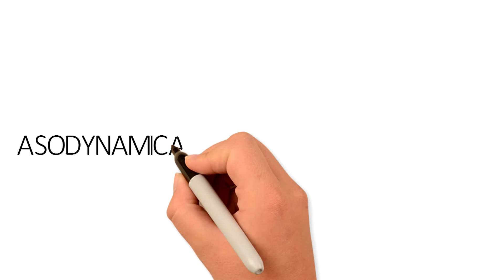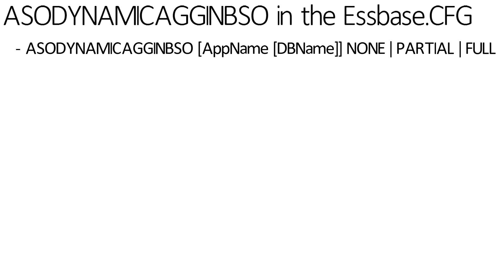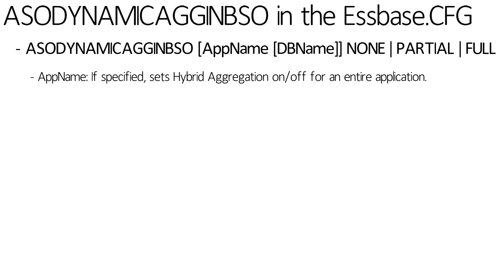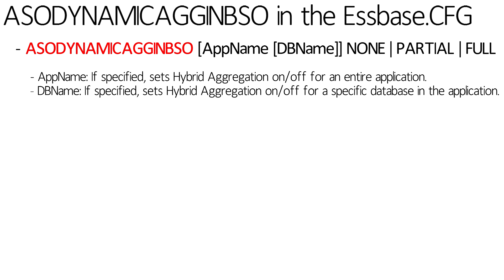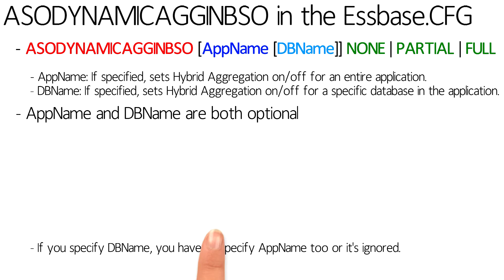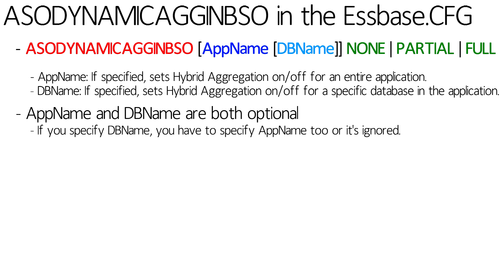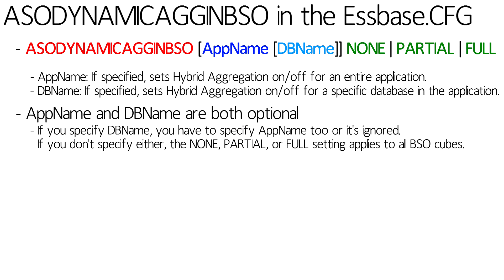You can have one or more than one ASO dynamic ag and BSO line inside of your S-Base CFG. You're going to say ASO dynamic ag and BSO, an application name or a database name if you want to specify it, and then either none, partial, or full. Application name is optional. If you specify an application name, then you can specify a database name, but you can't specify a database name without an application name or it just ignores it. If you leave out both app name and DB name, it's going to apply none, partial, or full to every BSO cube on your entire S-Base server.